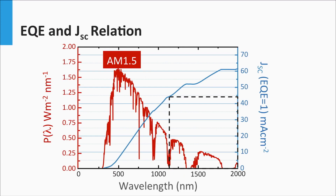Let's consider the design rules for solar cells as introduced in week 3, starting with spectral utilization. A band gap of 1.12 eV means that in theory we can generate a maximum short-circuit current density of 45 mA per square centimeter using crystalline silicon.